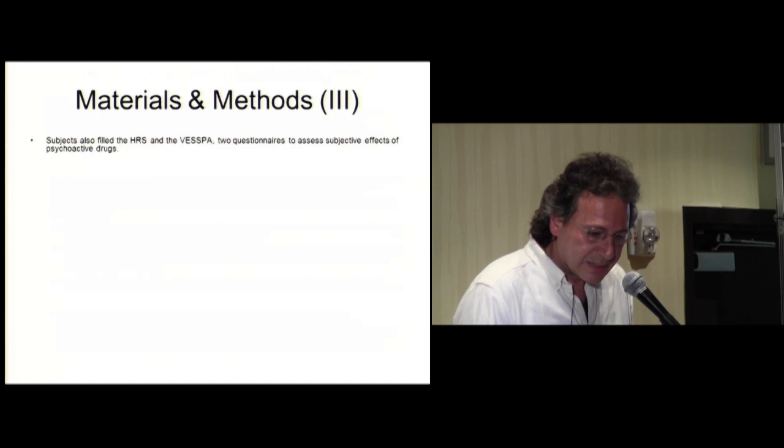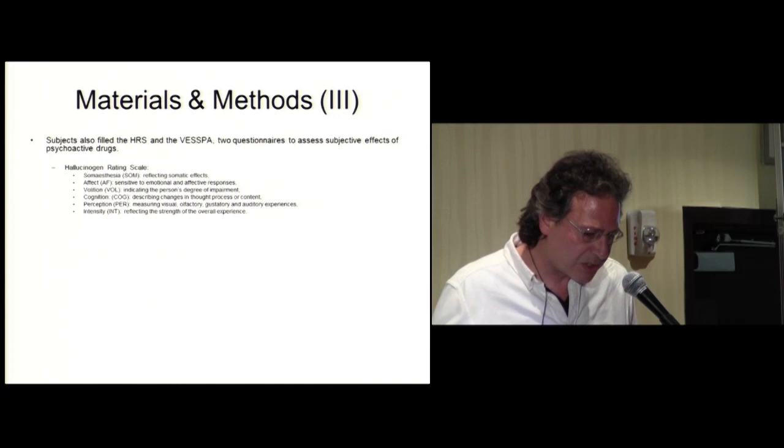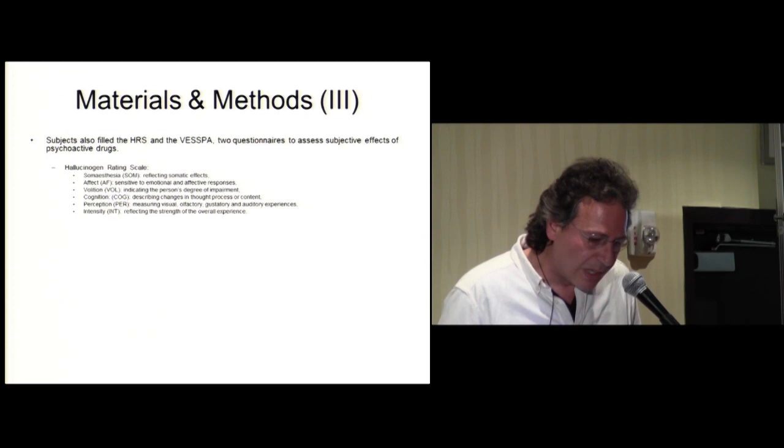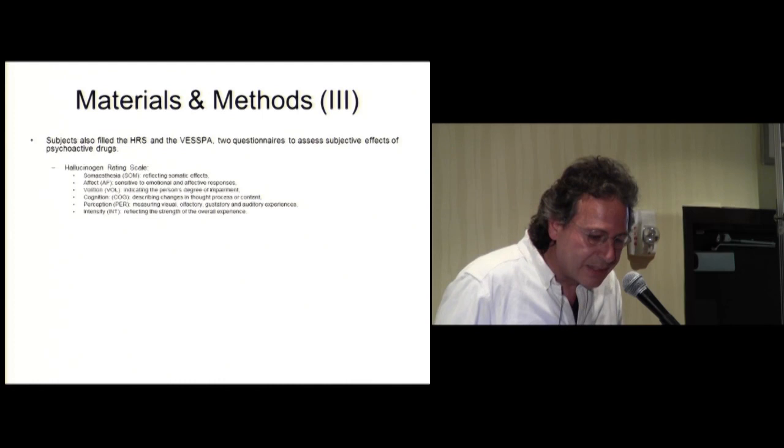Subjects also filled the Hallucinogen Rating Scale and the VESPA, which are two questionnaires to assess subjective effects of psychoactive drugs. The Hallucinogen Rating Scale has six subdimensions: Somaesthesia, reflecting somatic effects; Affect, that is sensitive to emotional and affective responses; Volition, indicating the person's degree of impairment; Cognition, describing changes in thought process or content; Perception, measuring visual or gustatory and auditory experiences; and Intensity, reflecting the strength of the overall experience.